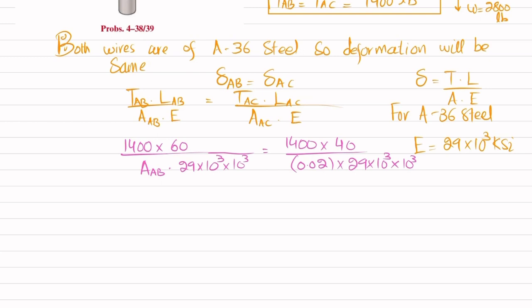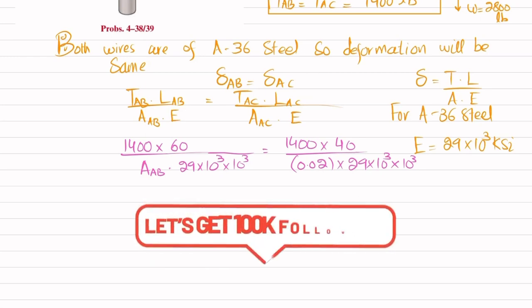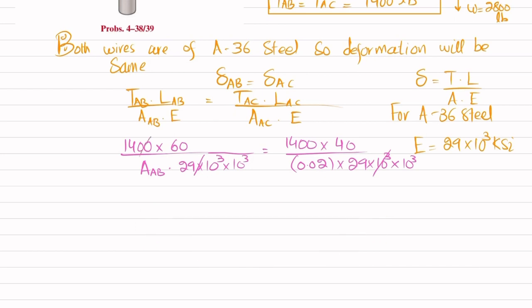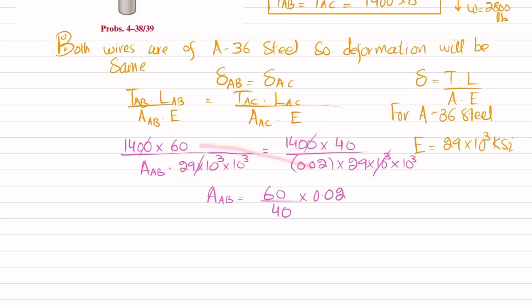The E terms cancel on both sides, and the 1400 cancels as well. We are left with A_AB = (60 / 40) × 0.02. When you calculate this, the cross-sectional area of wire AB comes out to be 0.03 square inches.